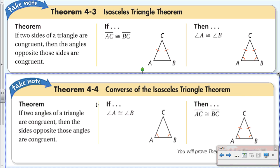Theorem 4-3 is the Isosceles Triangle Theorem. It says: if two sides of a triangle are congruent, then the angles opposite those sides are congruent. In triangle ABC, side AC is congruent to side BC, so angle A is congruent to angle B. These two sides are congruent, so the angles opposite those two sides are congruent as well.